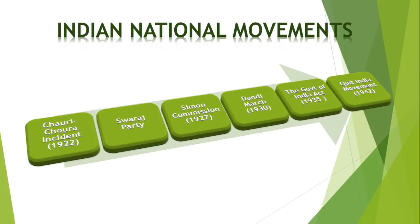Next is the Dandi March, 1930. Dandi was basically a small village, and this march was used to break the Salt Law — also called the Salt Satyagraha — done to achieve the goal of complete independence. Gandhiji launched a civil disobedience movement along with his 79 followers and started this march from Sabarmati Ashram on March 12, 1930.